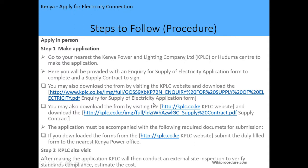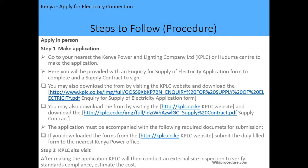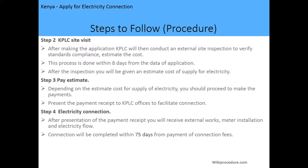The application must be accompanied by the required documents: a copy of your ID, copy of the title deed, and other documents already outlined. Note that if you download the forms from the website, you are supposed to fill them and submit them to your nearest KPLC office together with the required documents. After submitting, the second step is a KPLC site visit, where the company will come and visit your site to conduct an external inspection to verify standards compliance and estimate the cost of setting up the connection. This process is done within eight days of the application.